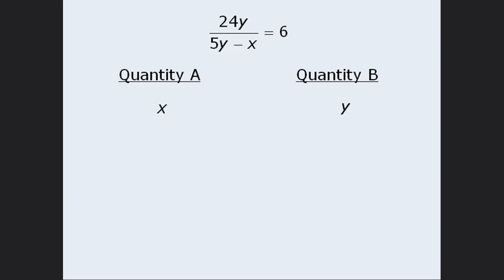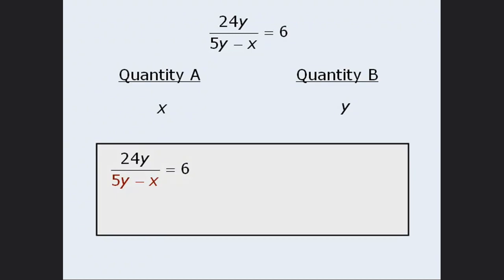Here's how the technique works. First, notice that in the given equation, we see that 24Y divided by this expression is equal to 6. Now, if we totally block out the denominator here, we can see that we have 24Y divided by something equals 6. Well, if 24Y divided by something equals 6, then that something must equal 4Y. In other words, the denominator — 5Y minus X — must equal 4Y.